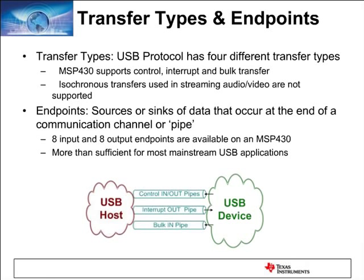Moving on to transfer types and endpoints. This section gets more detailed about key USB terminology and configuration. For someone new to USB, an endpoint is described as a source or sink of data — basically a source of information or a conduit through which data is transferred. There are four transfer types in USB: control, interrupt, bulk, and isochronous.